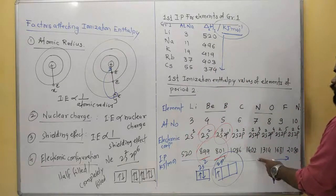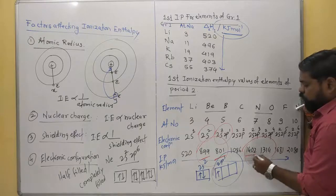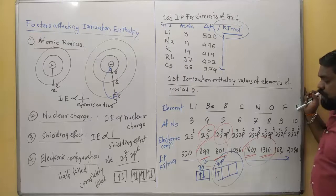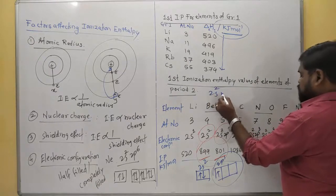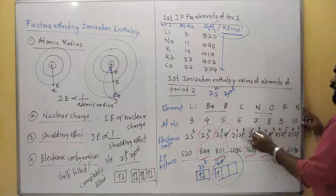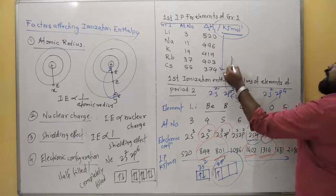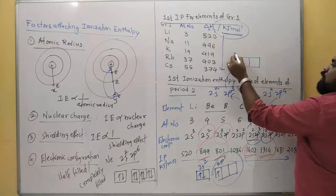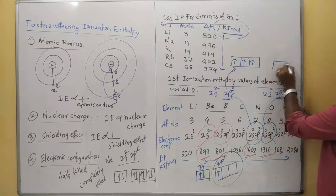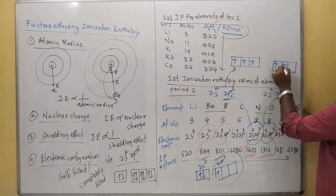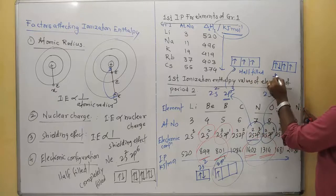For boron with 2p1, it is very easy to remove that electron. The 2s2 is completely filled and more stable, but the 2p1 electron is in a higher energy orbital and less stable — so less energy is required to remove it. That's why boron's IE value is 801, which is less than beryllium's 899. Beryllium's 2s2 is completely filled so it is more stable. Then values continue increasing: 1086, 1402.